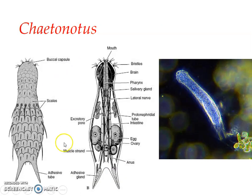The forked tail bears an adhesive gland, also referred to as a cement gland — similar to what we have seen in the case of Brachionus. The secretions from the cement gland are sticky in nature and help the animal adhere to solid structures. The body is ventrally flattened and dorsally slightly dome-like.